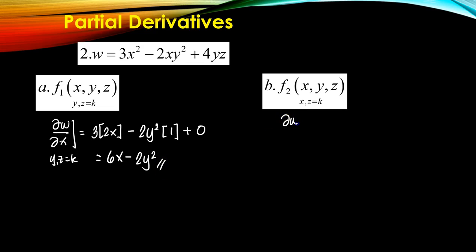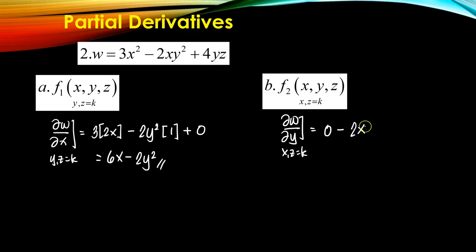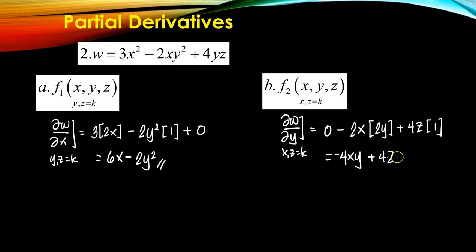Now solving for the partial of w with respect to y, x and z are the constants. The first term becomes 0. Then 2x is a constant and the derivative of y² is 2y. The last term gives 4z times the derivative of y, which is 1. So the answer is −4xy + 4z.